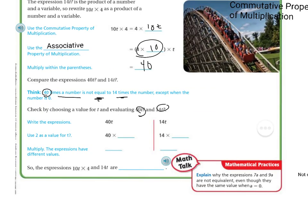If you write the expression 40T, use 2 as the value for T. So let's say I'm going to put in a 2. Instead of having my T, I'm going to put in a 2. So 40 times 2 is 80.